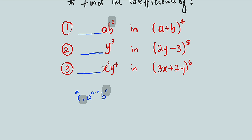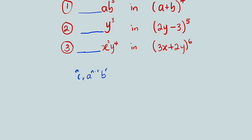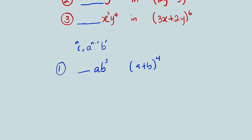You can see the power of b here is 3, therefore r is equal to 3 in that term. For problem number 1, we want to find the coefficient of ab to the third power in the expansion of (a + b) to the fourth power. You can clearly see that r is equal to 3. So we have n which is 4, combination 3, then a — the coefficient of a is 1 raised to the power of n minus r, that is 4 minus 3, which is 1.